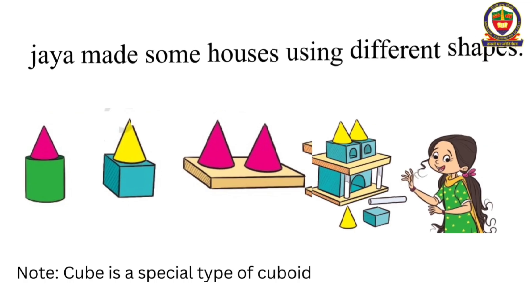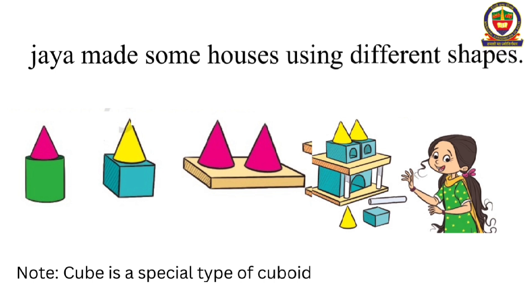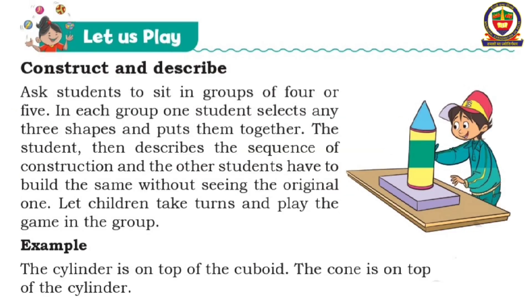Jaya made some houses using different shapes. These are the houses she had made. Note: a cube is a special type of cuboid — a cuboid in which all sides are equal is called a cube.